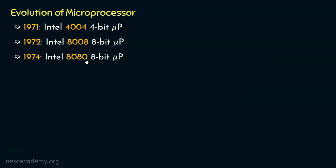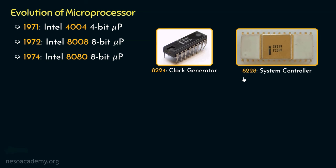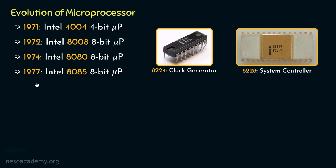Intel's 8080 required support chips like the 8224 clock generator — the timing and control unit — and the 8228 system controller, which assisted the 8080 with interfacing as a system bus driver. With improvements in integration technology, Intel was able to integrate these chips onto a single microprocessor chip, and as a result, in 1977, Intel introduced the Intel 8085 8-bit microprocessor.